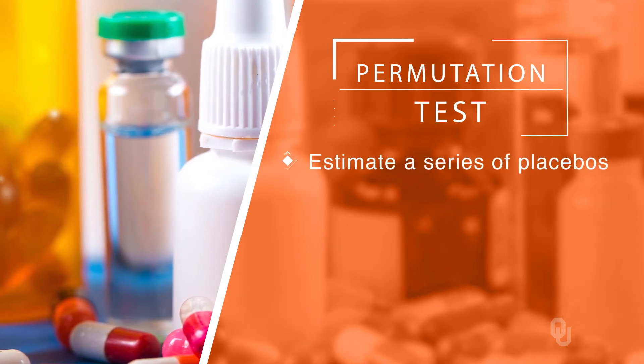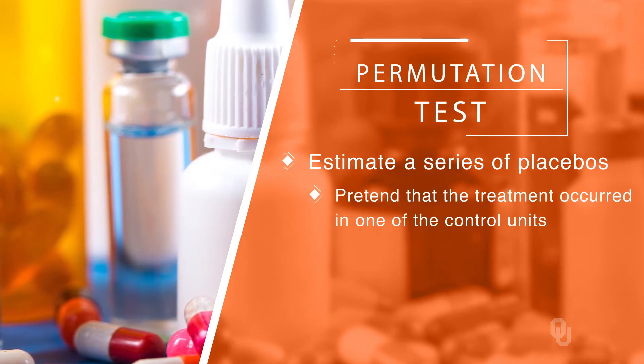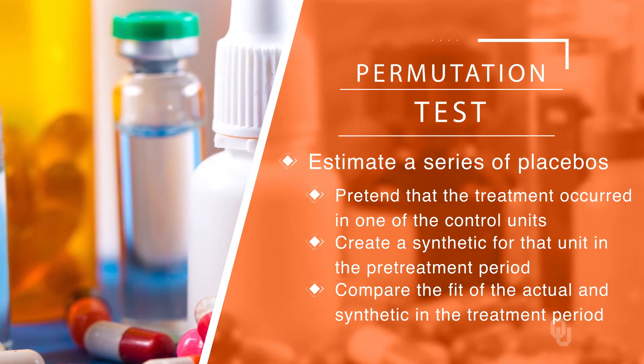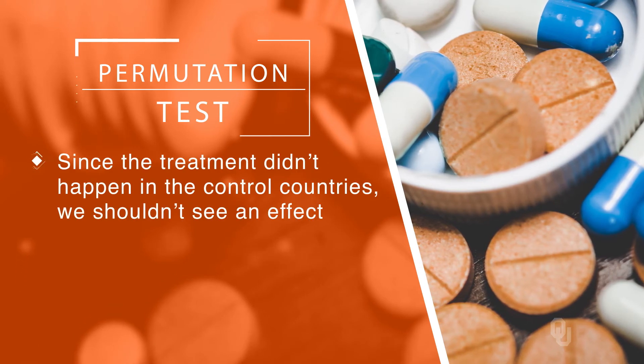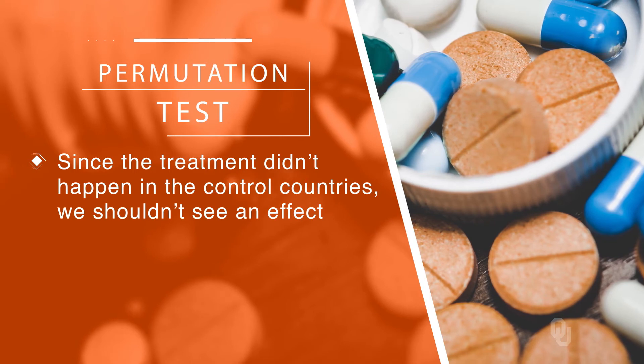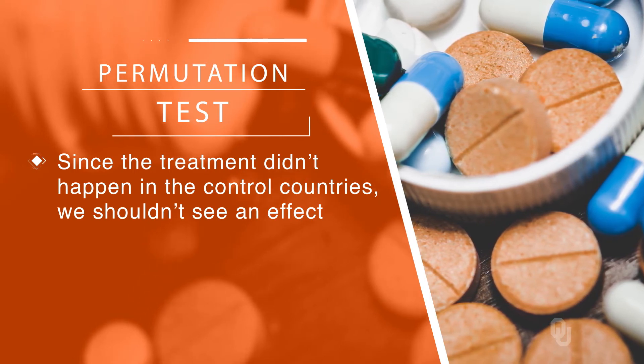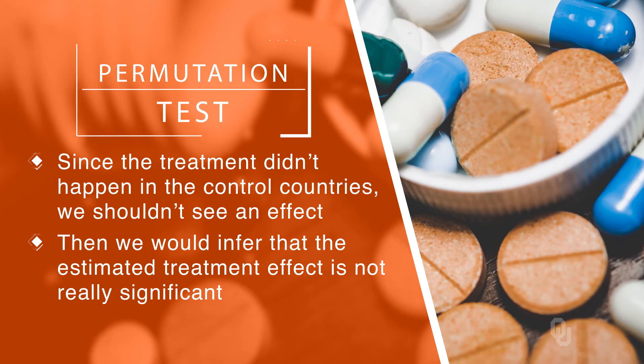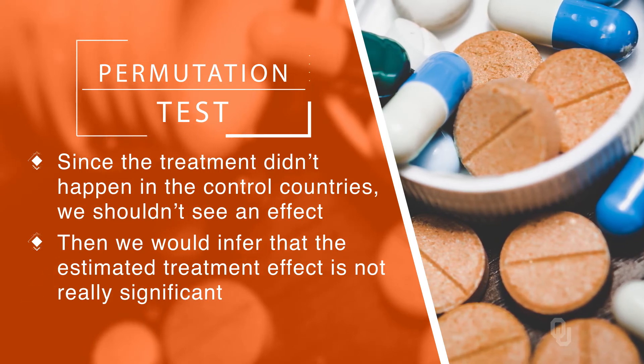As described, the method does not provide a significance test on the treatment effect. This isn't necessarily a problem, as case studies generally do not provide such tests. However, we can create a significance level via what is known as a permutation test. To do this test, we estimate a series of placebos — that is, we pretend that the treatment occurred in one of the control units, create a synthetic for that unit in the pre-treatment period, and then compare the fit of the actual and synthetic in the treatment period. We repeat this process for each of the control units. Obviously, since the treatment didn't happen in the control countries, we shouldn't see an effect. So if the bogus treatment effects estimated in the control units are the same size or larger than the one we estimate for the treated unit, we would infer that the estimated treatment effect is not really significant — it looks just like the noise generated by the placebo treatments.